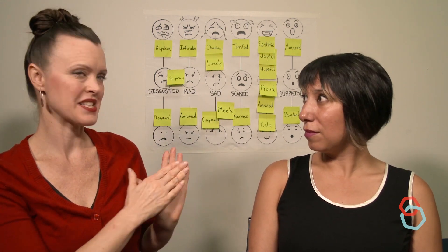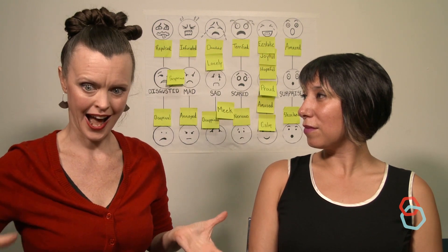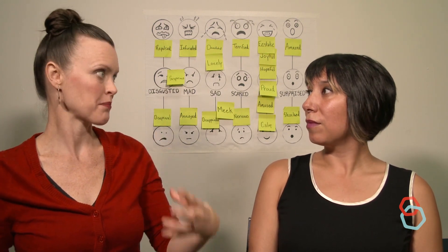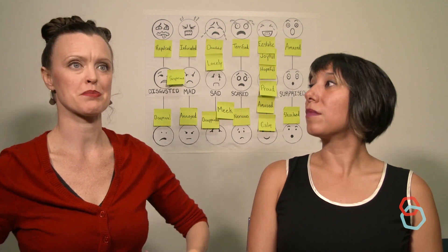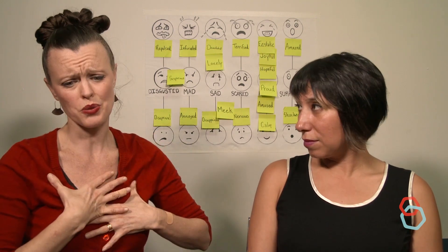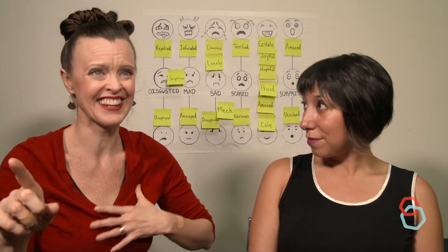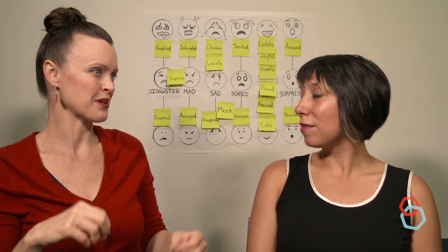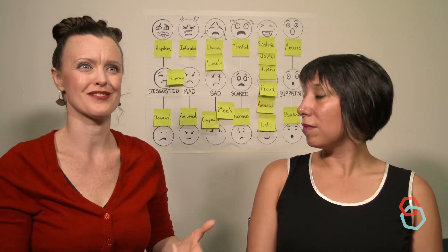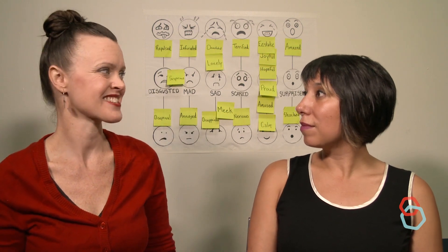A story sequence isn't just first, then, next, last. Each thing that happens in the story happens because somebody did something and that made somebody feel a certain way, and so they went and did this other thing. The whole story is a sequence of tactics and motives and causes and effects.